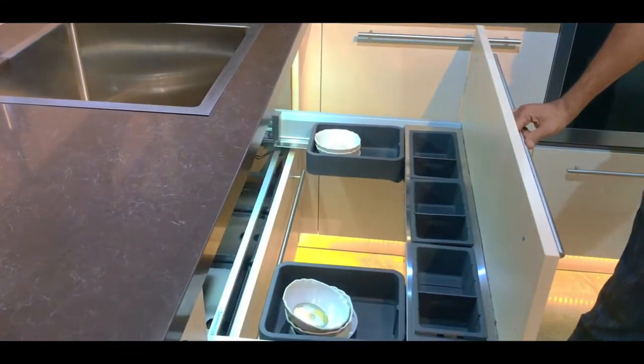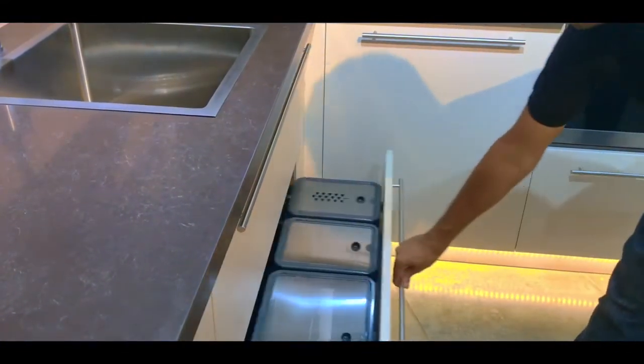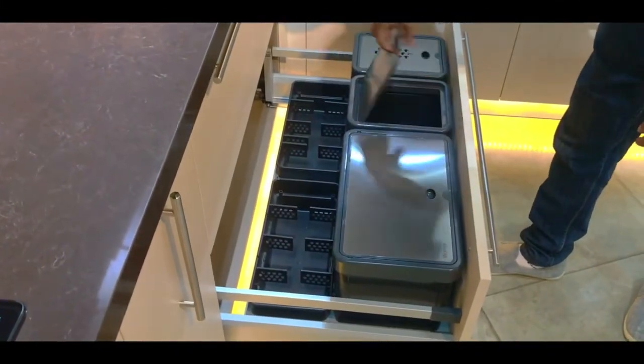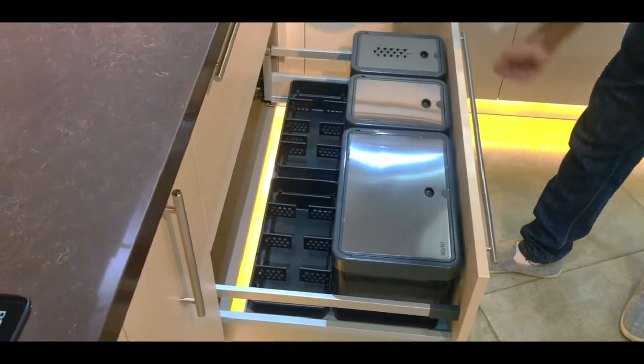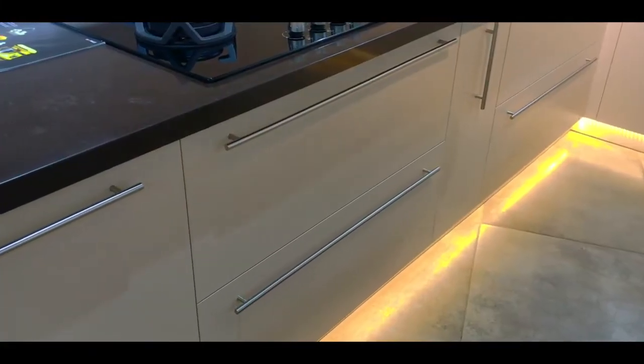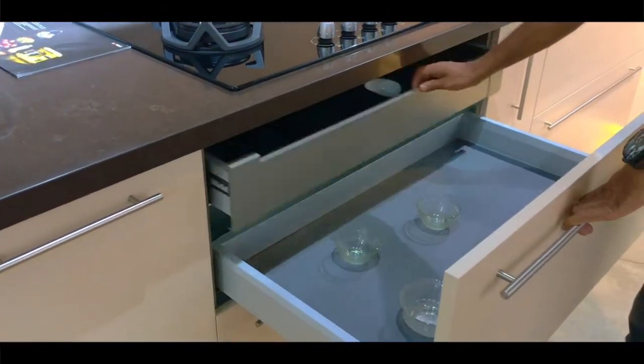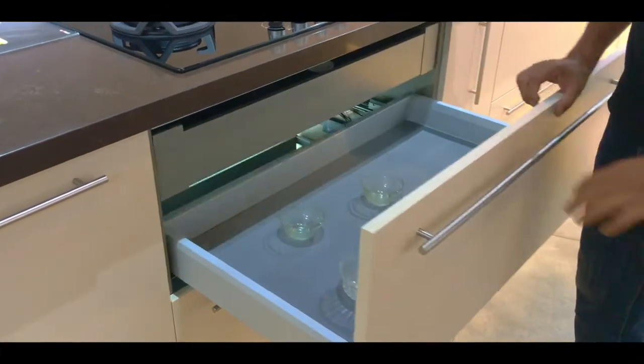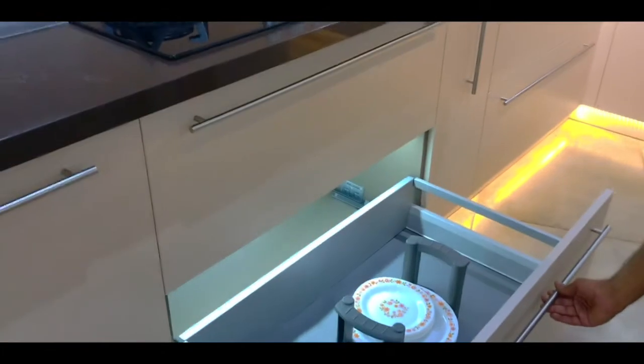The sink unit in the l-shaped kitchen can be accessed through pullouts. The pullouts come with detergent racks and an integrated dustbin for wet and dry wastes. The hob unit for the l-shaped kitchen comes with two pullouts. The top pullout comes with an integrated drawer which is a great option for storage of utensils. And the bottom comes with a plate rack.